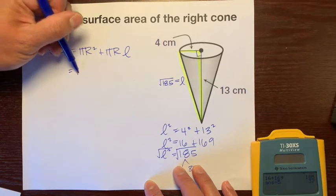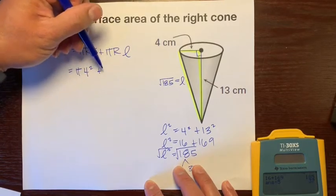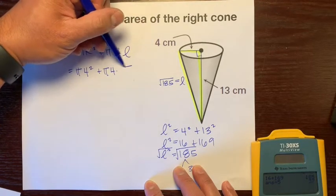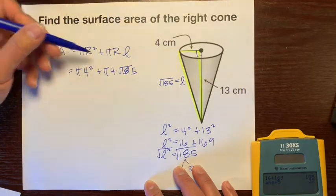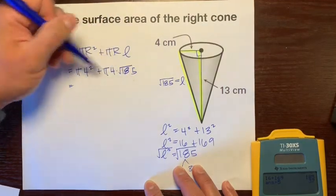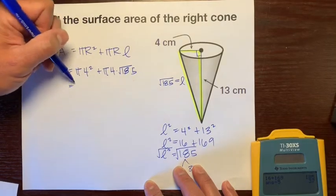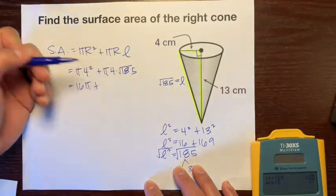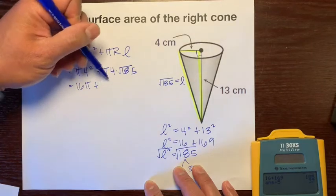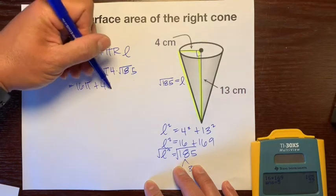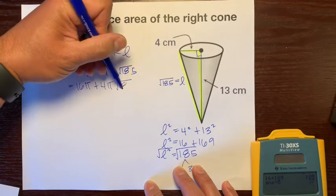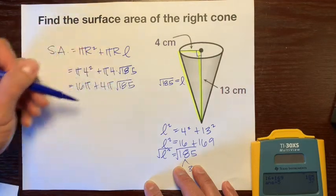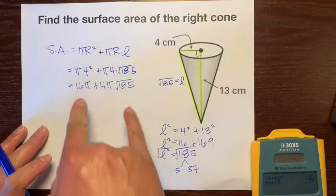Equals pi times 4 squared plus pi times 4 times the slant height, which is square root of 185. Let's simplify this some more. 4 squared is 16 pi plus - we really can't multiply anything unless we want to go decimal. So let's leave it as 4 pi square root of 185. All I did was rearrange the numbers: the number first, then pi, then the radical at the end.